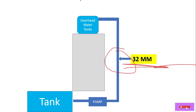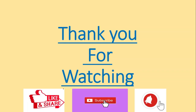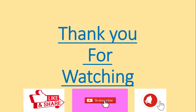So in this way we can calculate the pipe diameter for a water supply pipe using the formula Q = AV, where Q is discharge, A is cross-sectional area, and V is velocity. Hope you guys understand. Thank you for watching — please like, share, comment, and subscribe, and hit the bell icon for notifications on upcoming videos.